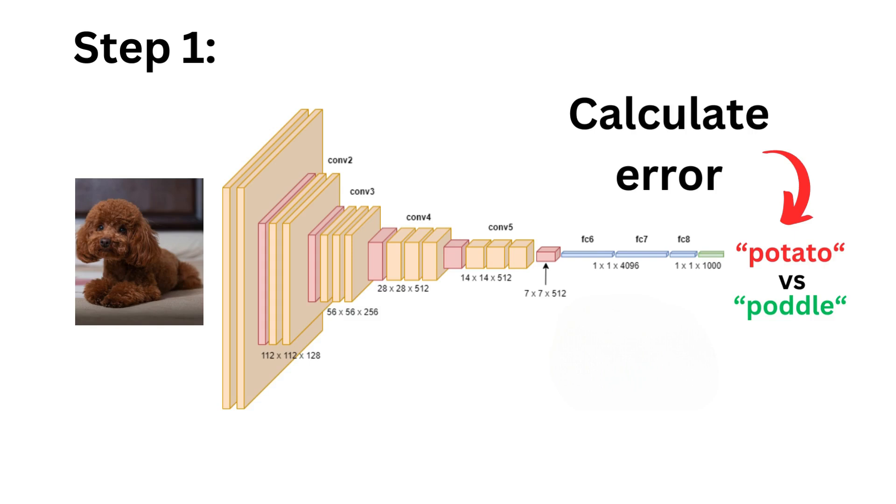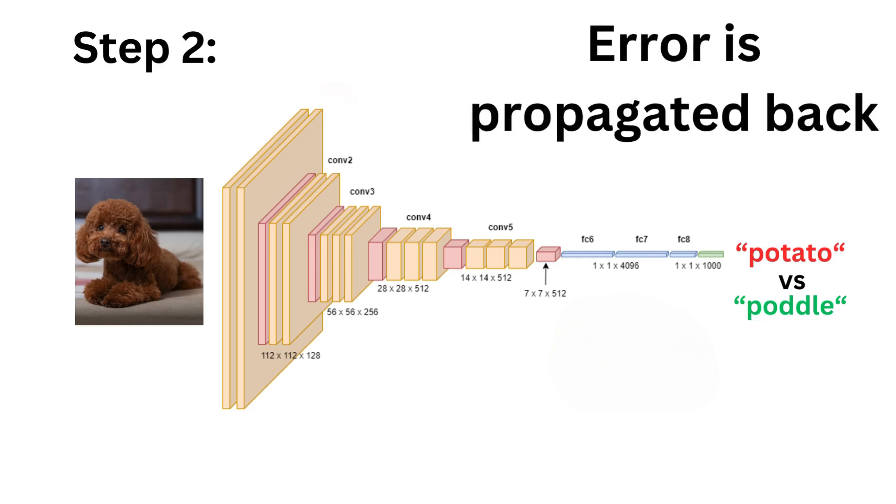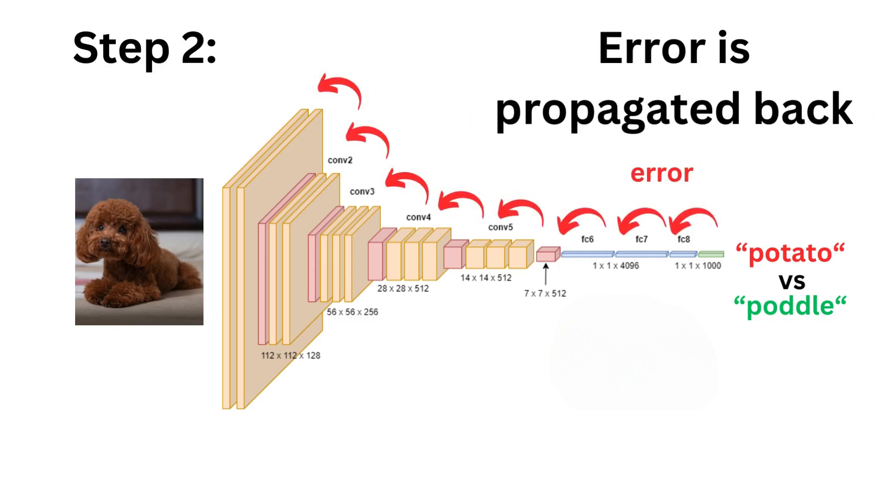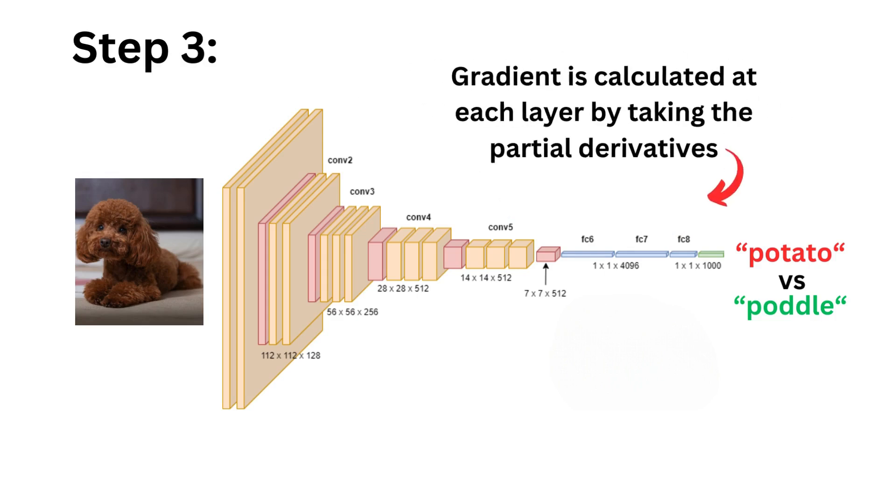Step one: the error is calculated using the output label and what the ground truth actually is. Many error metrics exist here, which will have different impacts on the learning procedure.